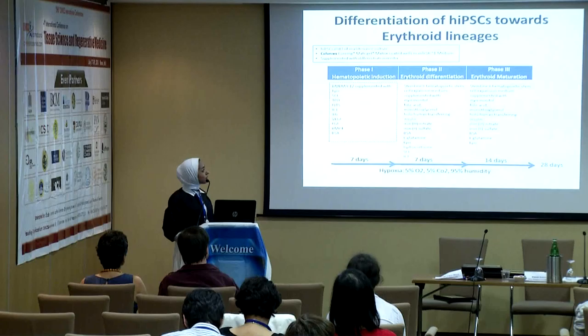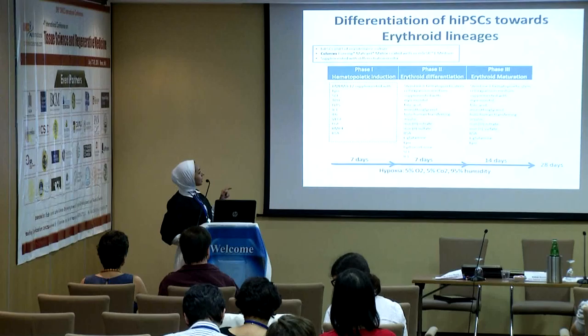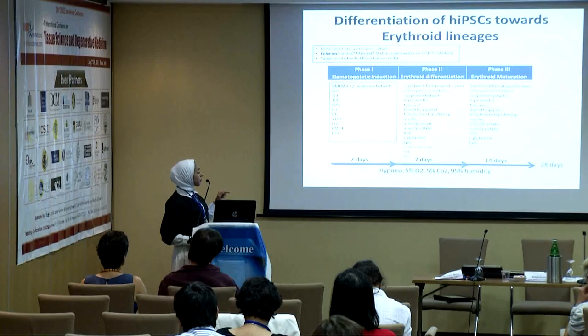Those cells, confirmed to be pluripotent, were ready to be differentiated with our optimized protocol, which comprised three main phases. The first was hematopoietic induction, followed by erythroid differentiation — seven days for each phase — and then 14 days in phase three, which was the erythroid maturation phase. The whole protocol took only 28 days and took place under hypoxic condition.